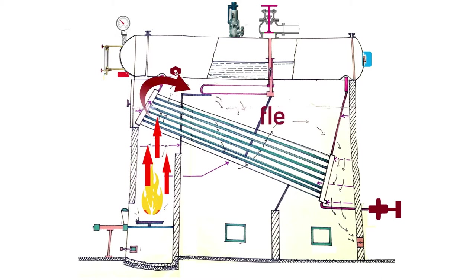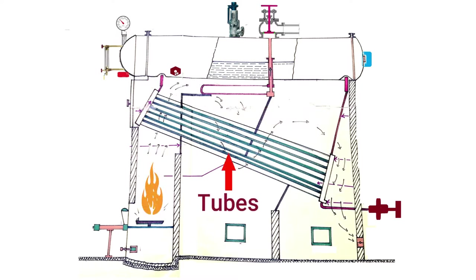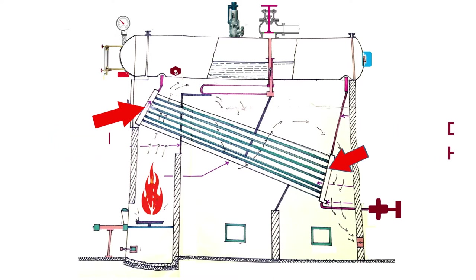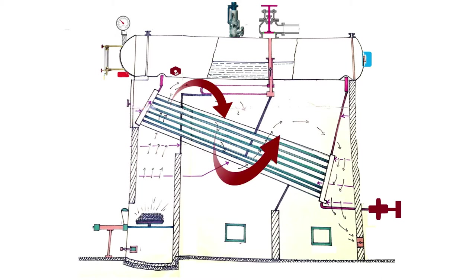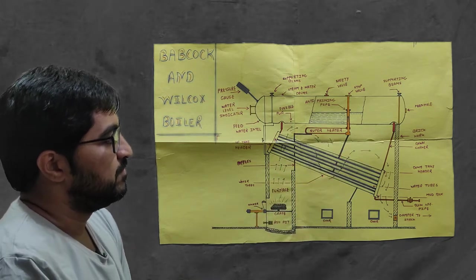After combustion of coal, flue gases are generated. To give the proper path to the flue gases, we use baffles. In the path of the bundle of tubes, baffle plates are provided to generate a sine wave type of flow, so that maximum surface area is covered to transfer heat between the flue gases and the tubes.